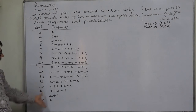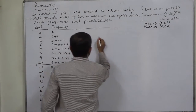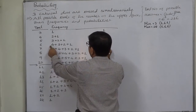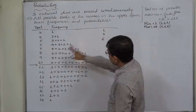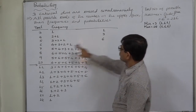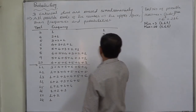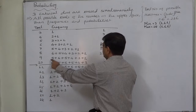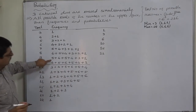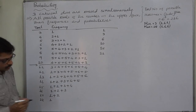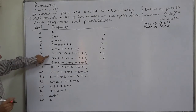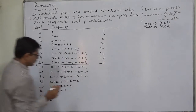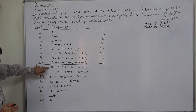Now let us write the frequencies — just the summation of all these. It will be: total three gives frequency 1; four gives 2 plus 1 equals 3; five gives 3 plus 2 plus 1 equals 6; six gives 4 plus 3 plus 2 plus 1 equals 10; add the next value, 6 plus 4 equals 10 — wait, seven: 5 plus 4 plus 3 plus 2 plus 1 equals 15; eight: 6 plus 5 plus 4 plus 3 plus 2 plus 1 equals 21; nine: 5 plus 6 plus 5 plus 4 plus 3 plus 2 equals 25; ten: 4 plus 5 plus 6 plus 5 plus 4 plus 3 equals 27. This is the highest possible frequency.